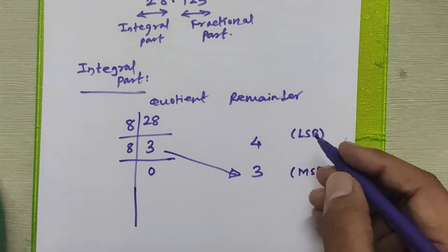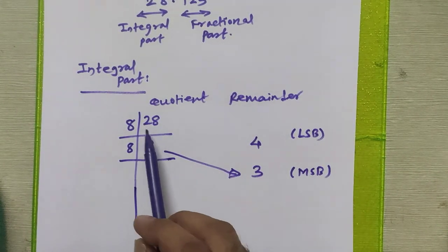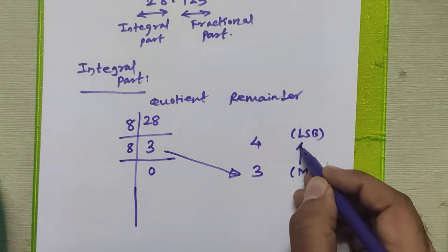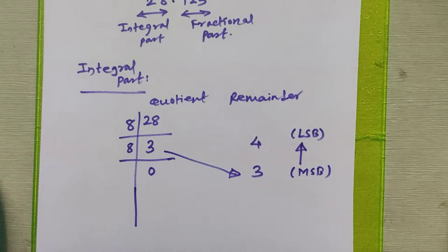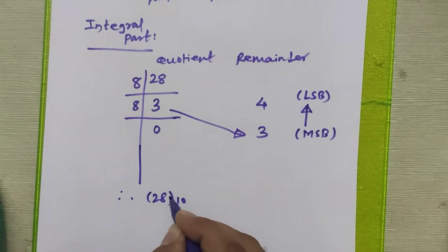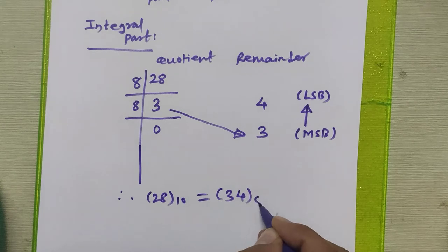This is the MSB bit and this is the LSB bit. MSB bit is most significant bit, LSB is least significant bit. To get the octal equivalent for this decimal number 28, we have to arrange these remainders from bottom to top. For integral part we have to apply this procedure. Therefore I can say that 28 decimal is equal to 34 in octal.